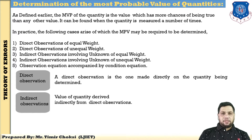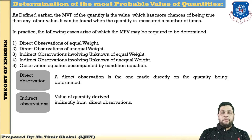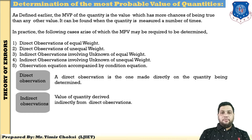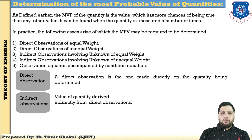I have already given an example in a previous session. In this session you will find how to find the most probable value. In practice, the following cases arise for which the most probable value may be required to be determined: Case 1 is direct observation of equal weight. Case 2 is direct observation of unequal weight. Case 3 is indirect observation involving unknowns of equal weight. Case 4 is indirect observation involving unknowns of unequal weight.